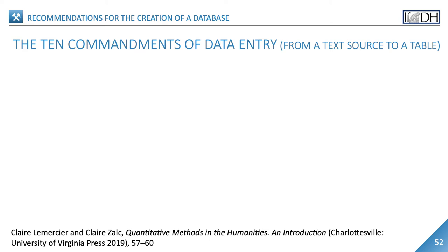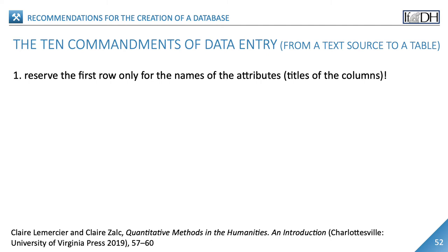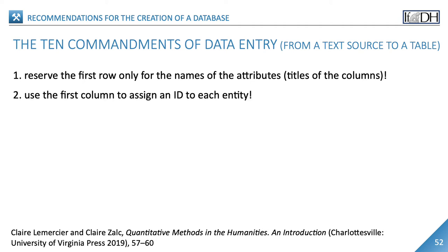Claire Le Mansi and Claire Sorg have defined ten commandments of data entry in their book Quantitative Methods in the Humanities. First, reserve the first line only for the names of the variables — the rest of the worksheet should contain data about the entities. This is important to allow sorting. You should keep notes, calculations and other data in additional files or sheets. Secondly, use the first column to assign an ID to each entity. If you find or reasonably decide that two entities are actually the same, change the ID accordingly. It is not a problem if some numbers are not used as identifiers — they do not have to start with one either.